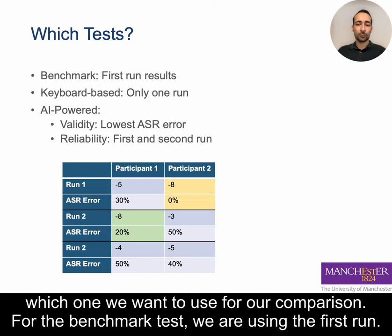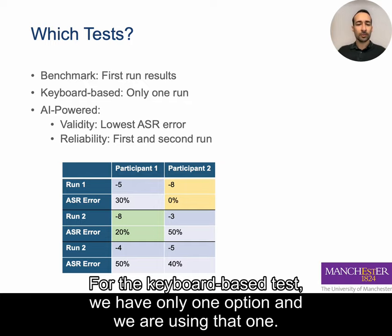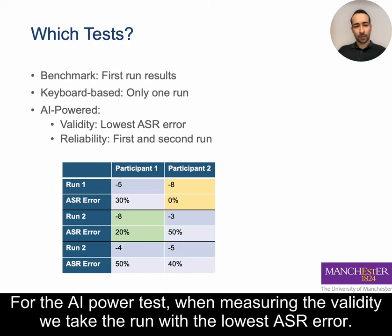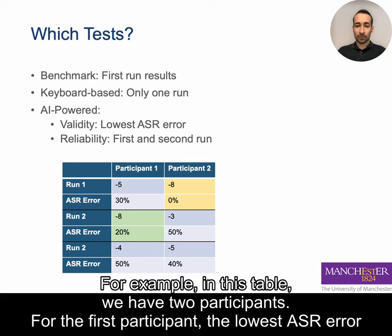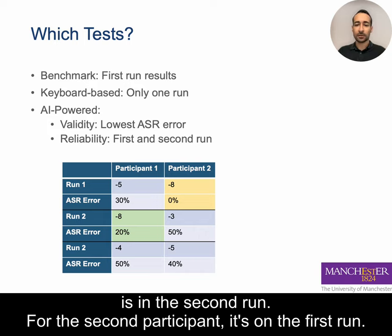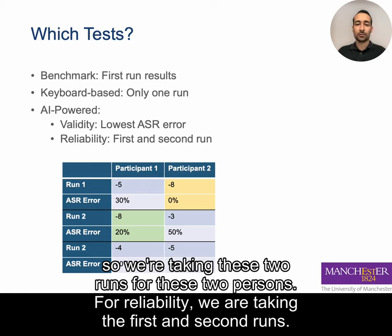Since some tests are done more than once, we need to decide which run to use for comparison. For the benchmark test we use the first run; for the keyboard-based test we have only one option. For the AI-powered test, when measuring validity, we take the run with the lowest ASR error — meaning when the participant repeated the correct number but ASR transcribed it incorrectly. For example, for one participant the lowest ASR error is in the second run, and for another it is in the first run.